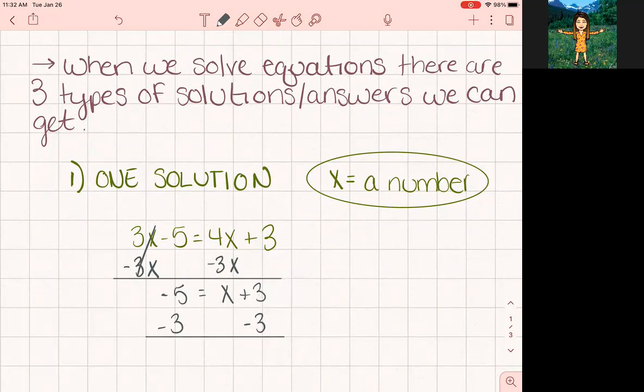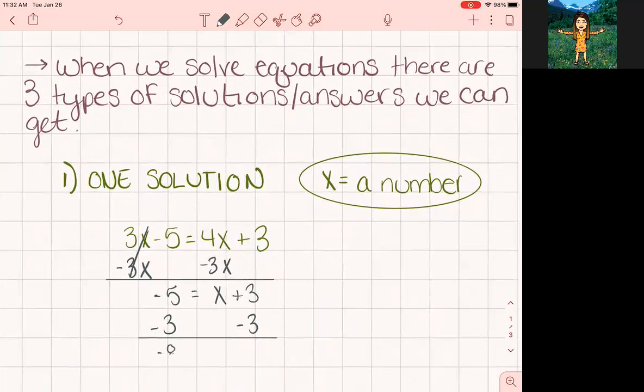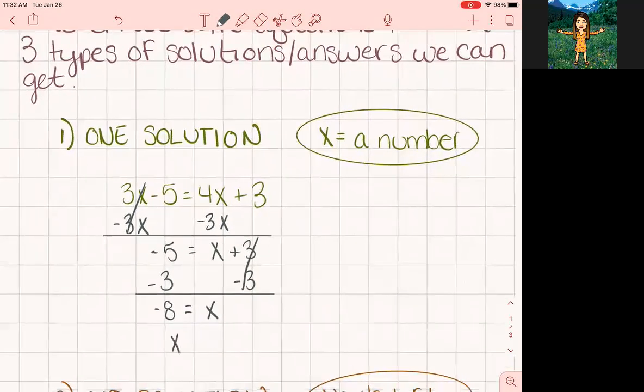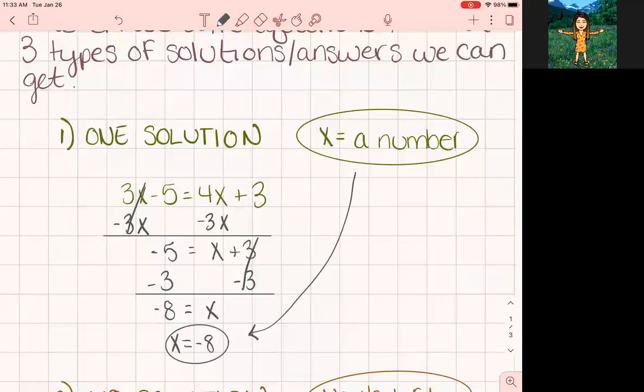Negative 5 and three more negatives is negative 8x, and the 3s are gone. So then our answer, we just flip it around, x equals negative 8. So that's what we mean when we say x is equal to a number. That's the one you're used to, super easy. There's two other possibilities.